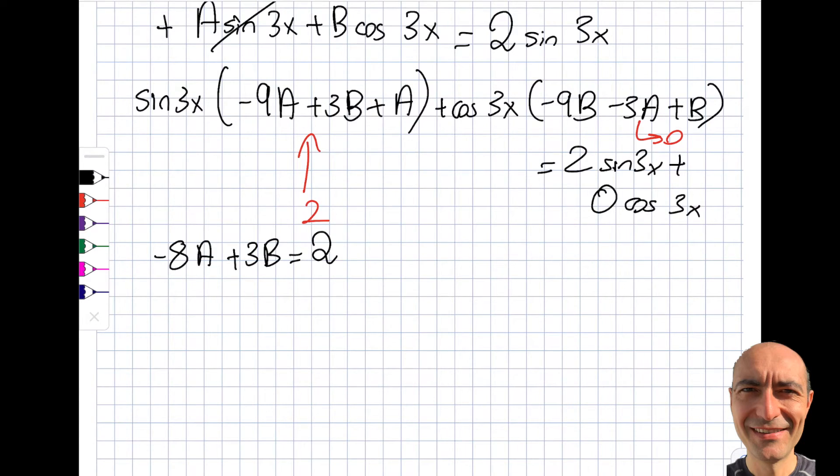And the second one I get myself minus 8b this time. Let's be careful, minus 3a is equal to 0. So let's multiply this by 3, let's multiply this by 8, and then what? Subtract, then a will be vanishing, 9b plus 64b will be equal to 6.